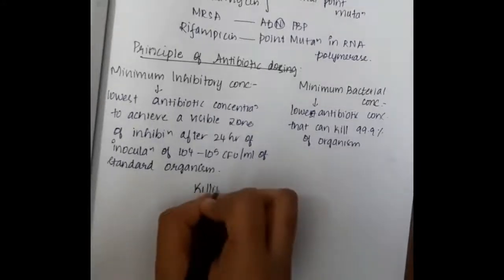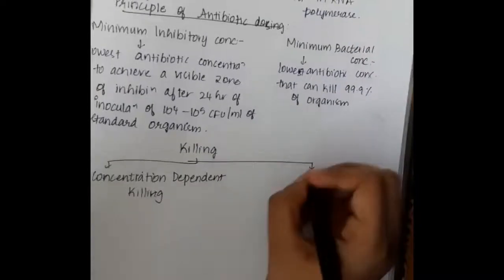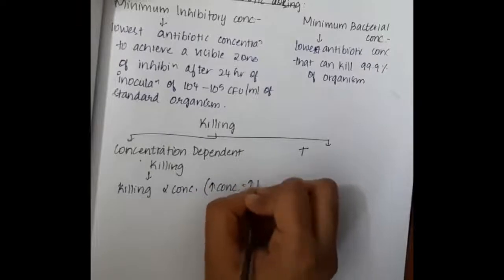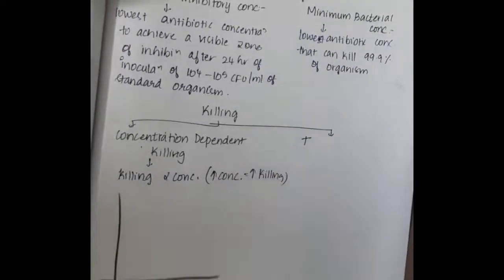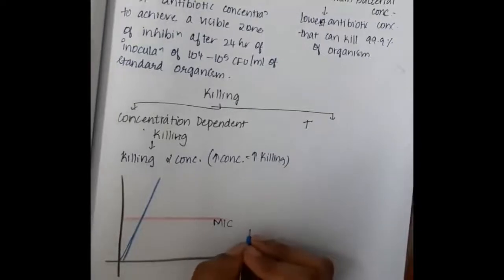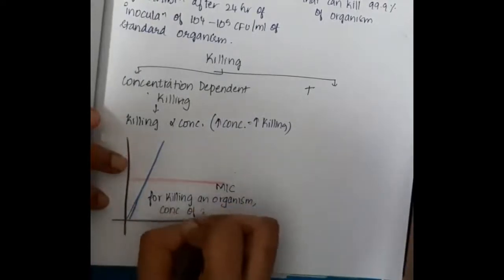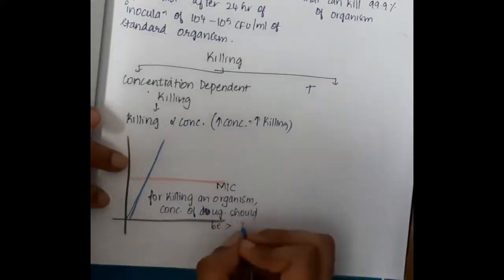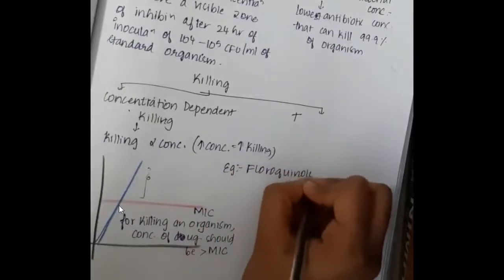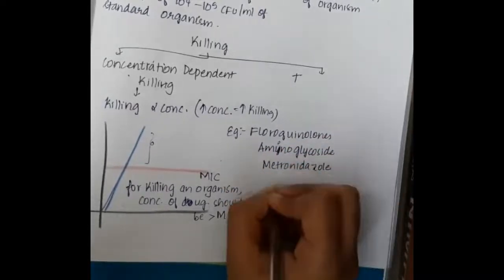Killing of bacteria can be of two types: concentration-dependent killing or time-dependent killing. In concentration-dependent killing, killing is directly proportional to the concentration — increased concentration will increase the killing. The drug concentration should be above the minimum inhibitory concentration; only then are the bacteria killed. Examples include fluoroquinolones, aminoglycosides, and metronidazole.